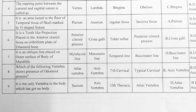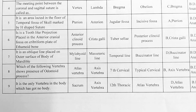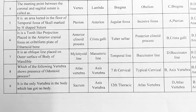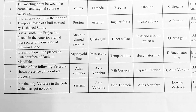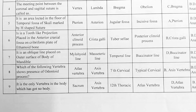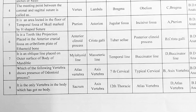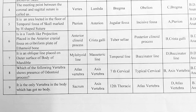Next. It is the only vertebra in the body which has got no body. Options — A: sacrum, B: axis vertebra, C: 12th thoracic vertebra, D: atlas vertebra. Option D is correct, atlas vertebra.